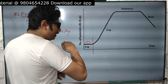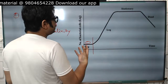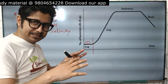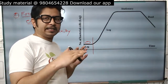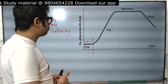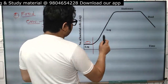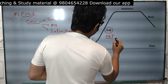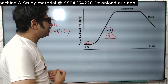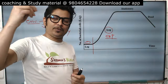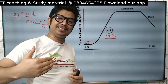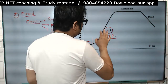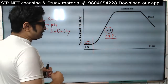The lag phase is where the bacteria is not growing. The bacteria is producing important proteins and enzymes in order to utilize the food available in that particular environment. After that comes the log phase, also known as the exponential phase. This is the phase where bacteria actually grow from 2 to 4, 4 to 8, 8 to 16, 16 to 32 — huge and very fast growth.